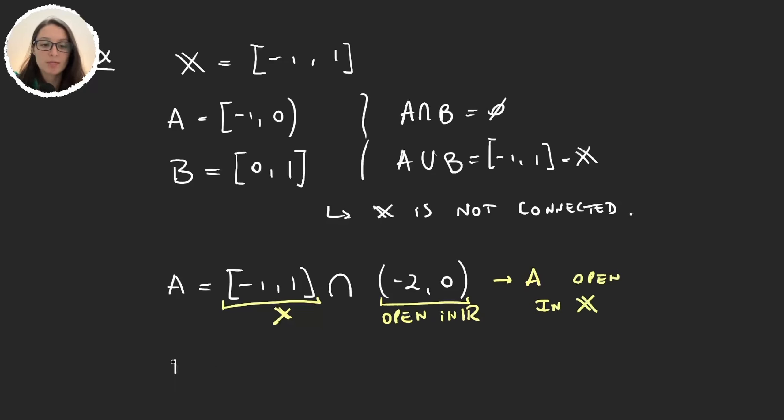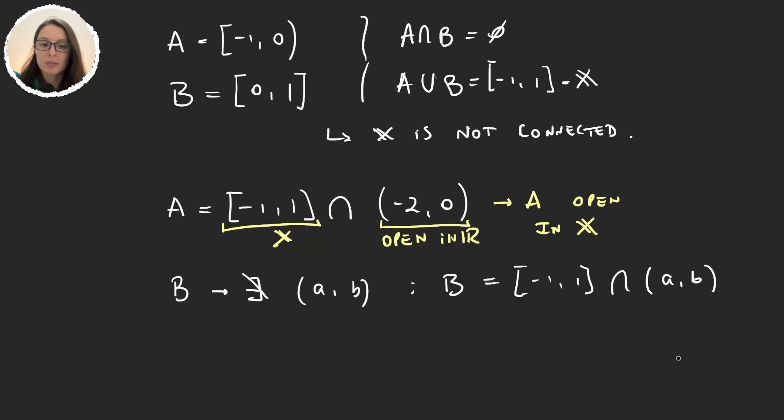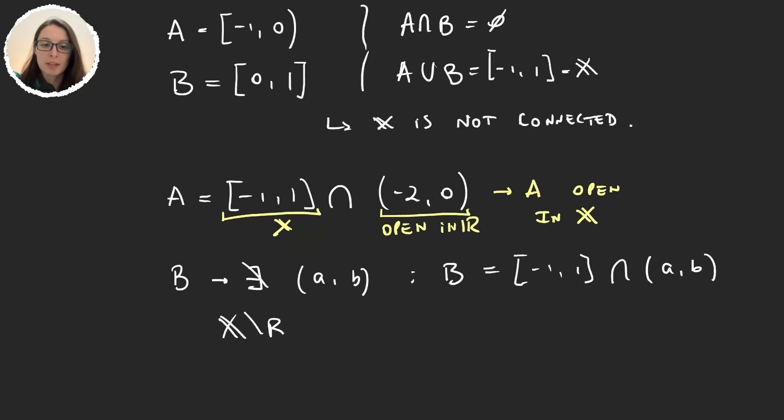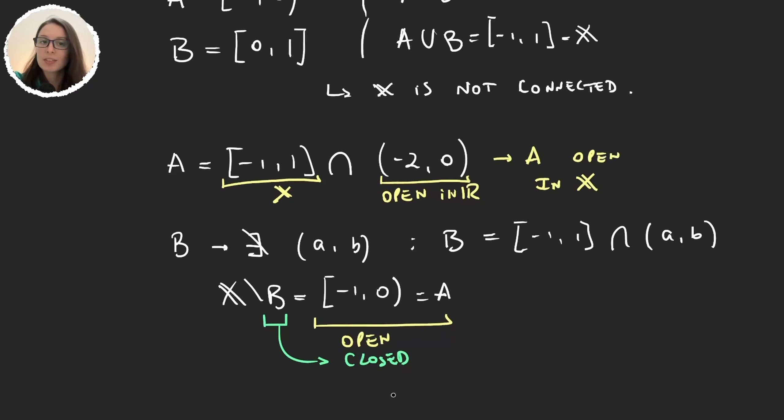And the set B? Well for the set B there doesn't exist an interval (a,b) open such that B is equal to [-1,1] intersection this interval. And even more, X minus B is [-1,0]. And this is A. So given that this is an open set we actually have that B is closed. So no, this is not a separation.